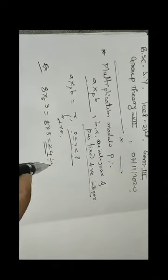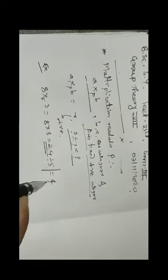Let us work through an example: 8 cross-p 3, where p is 5. We compute the ordinary product 8 times 3, which is 24. Then divide 24 by 5; the remainder is 4. So r equals 4. Therefore, 8 cross-5 3 equals 4. We take the ordinary multiplication, divide by p, and the remainder is our product.